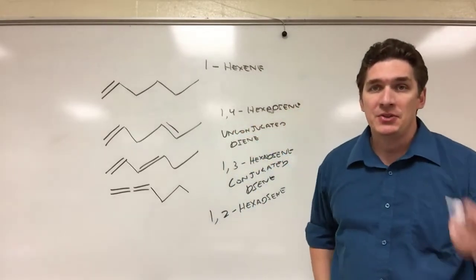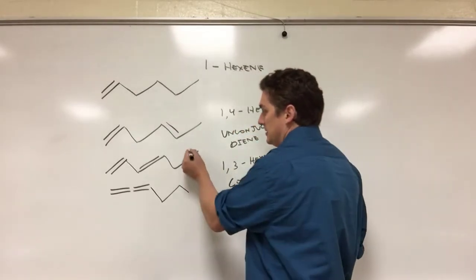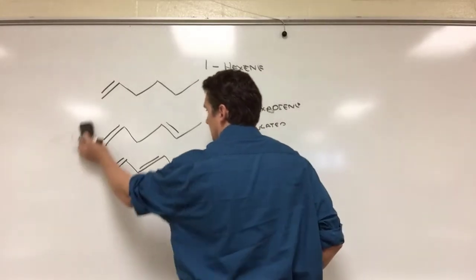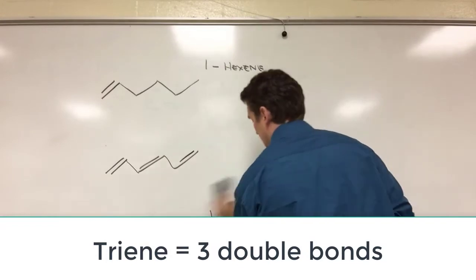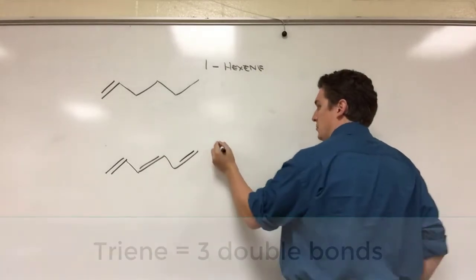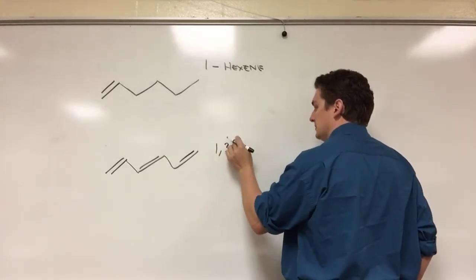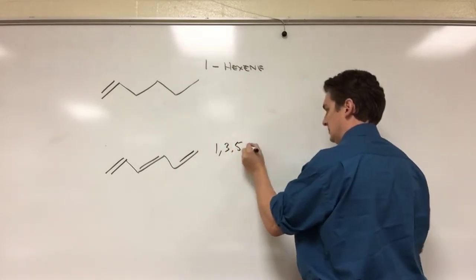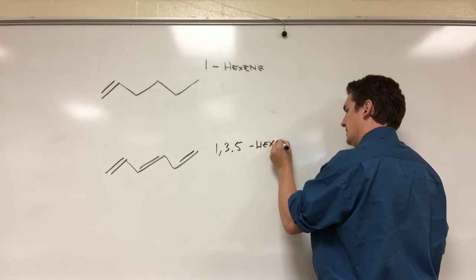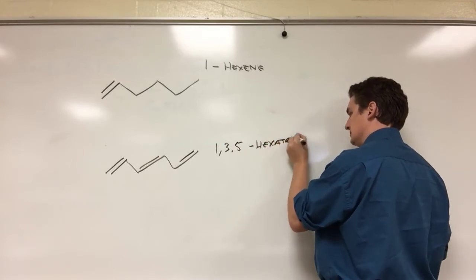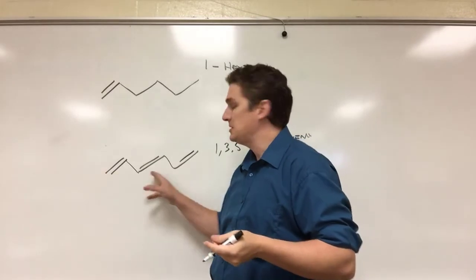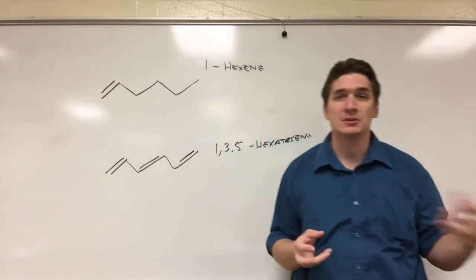Now let's say we had a third double bond. So let's do this one. This would be 1,3,5-hexatriene. And this is super conjugated. Each double bond here is separated by a carbon-carbon single bond.